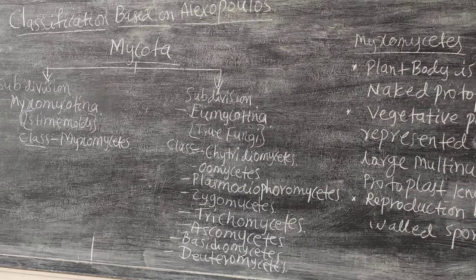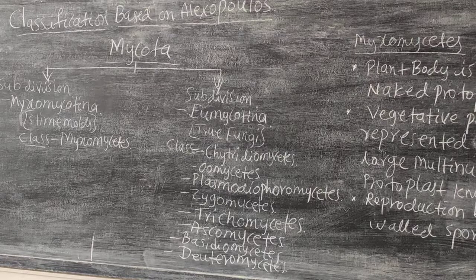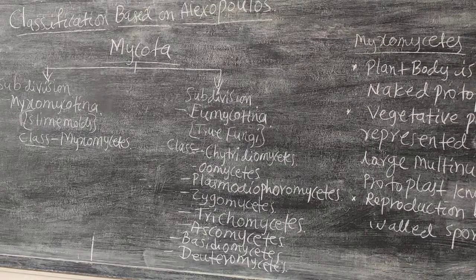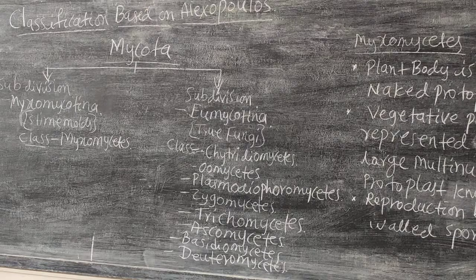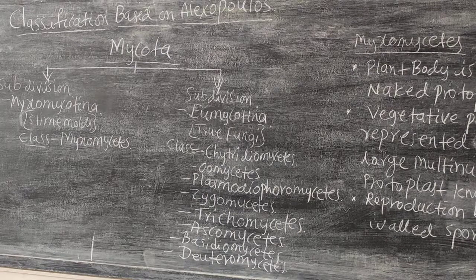The second subdivision is Eumycotina. All the true fungi are put under the subdivision Eumycotina. It includes various classes such as Chytridiomycetes, Oomycetes, Plasmodiophoromycetes, Zygomycetes, Trichomycetes, Ascomycotina, Basidiomycetes, and Deuteromycetes.